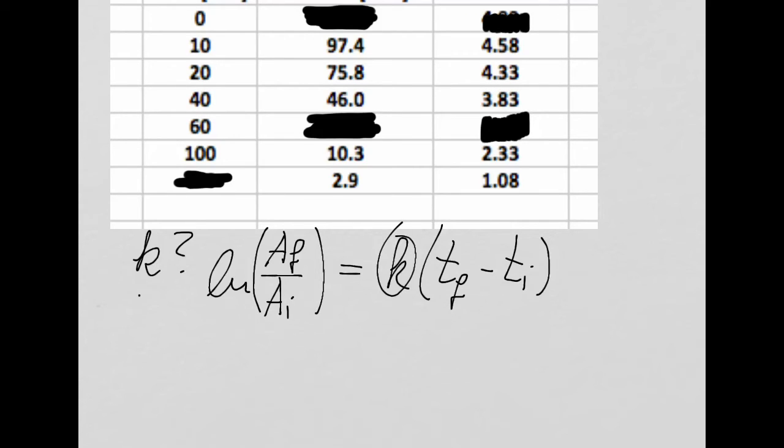So, I want you to use the data to get this rate constant. Now, how can we do that? Well, what do we know? What kind of order is it? It's still a first order reaction. So, we can use a first order equation for that. Where we have ln(A final / A initial) equals K times (T final minus T initial).